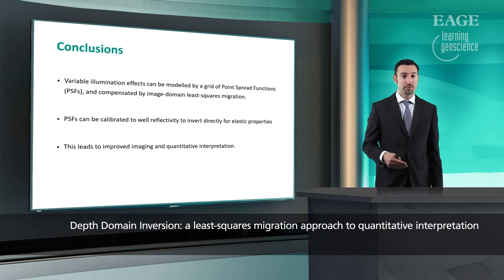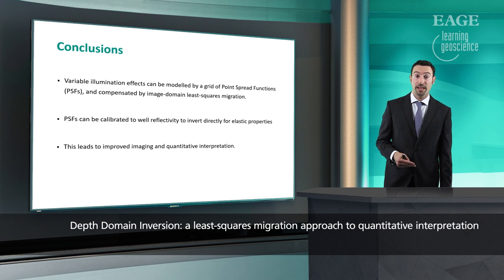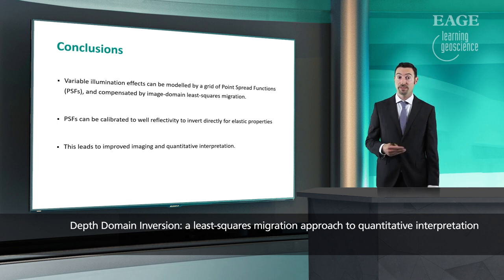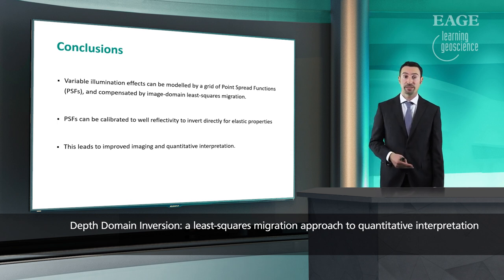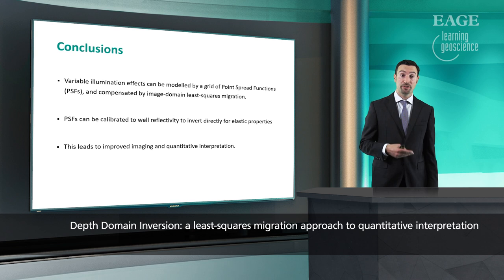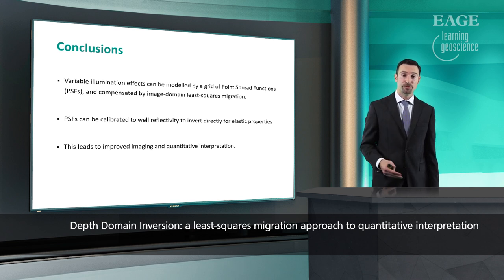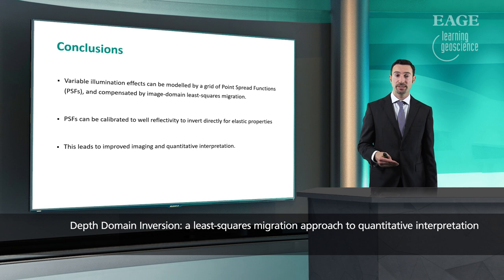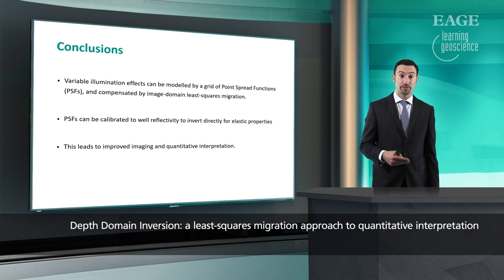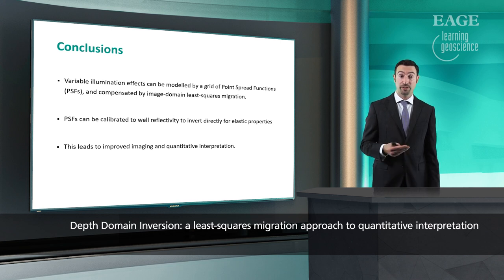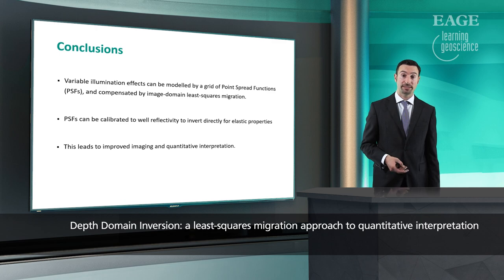In conclusions, variable illumination effects can be modeled using point-spread functions, and then compensated by an image domain least-squares migration. Point-spread functions can be calibrated to the well reflectivity to invert directly for elastic properties, and this has a number of advantages that makes the results much more reliable and easier to parameterize. This, finally, leads to improved seismic imaging and improved reservoir characterization.